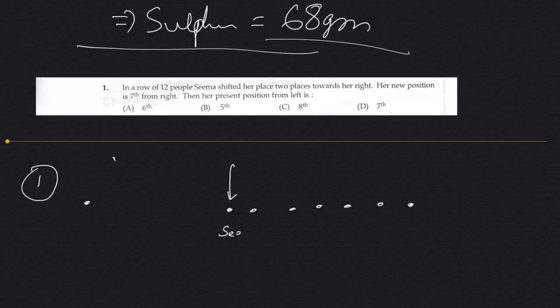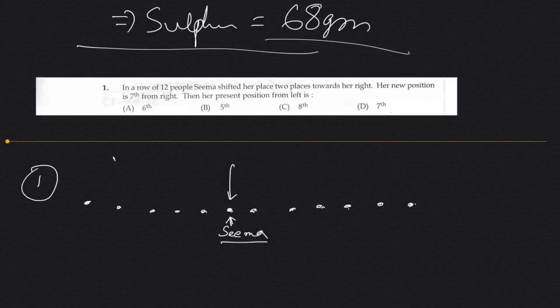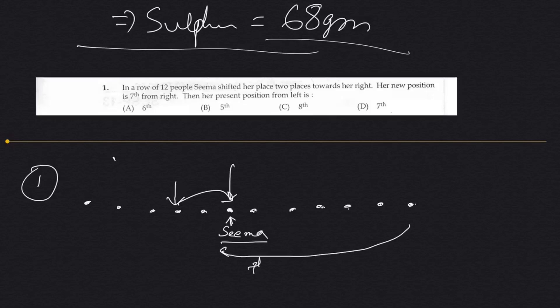So, Sima is here. In a row of 12 people — 1, 2, 3, 4, 5, 6, 7, 8, 9, 10, 11, 12 — Sima shifted her place two places towards her right. The original position was here; she shifted to here. This position is 7th from the right: 1, 2, 3, 4, 5, 6, 7.